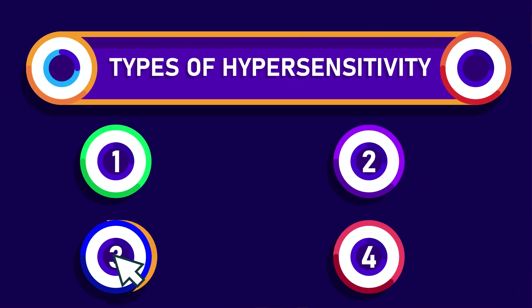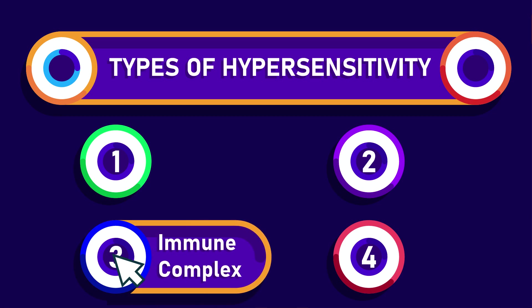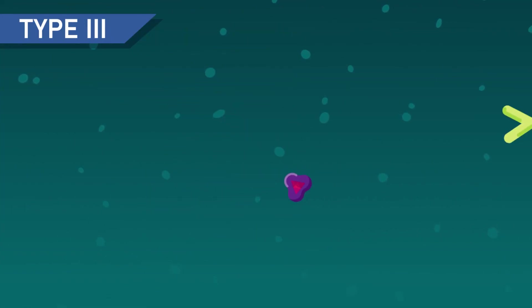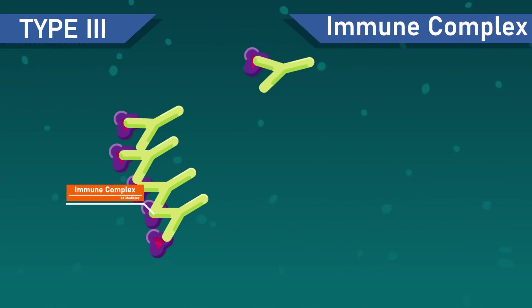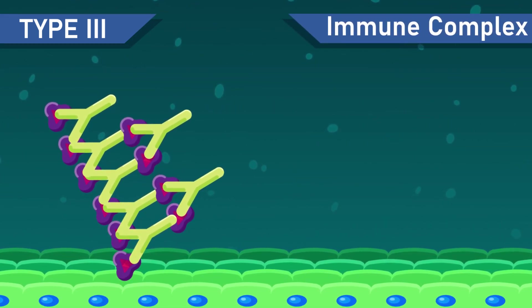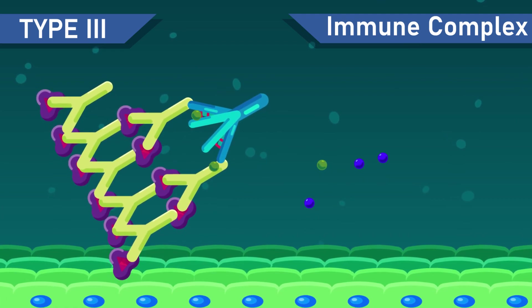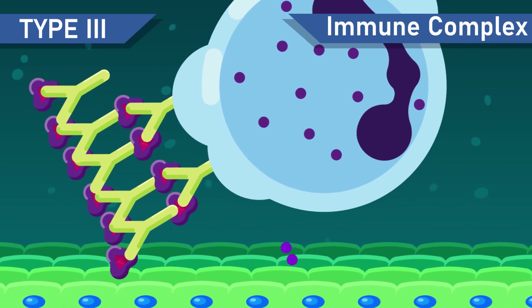Type 3 or immune complex hypersensitivity. In this type, antibodies may bind with an antigen or another antibody to make an immune complex. These immune complexes will be deposited in tissues and cause damage by activating the complement system.